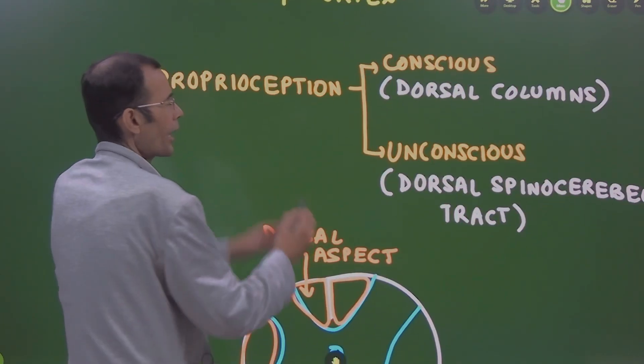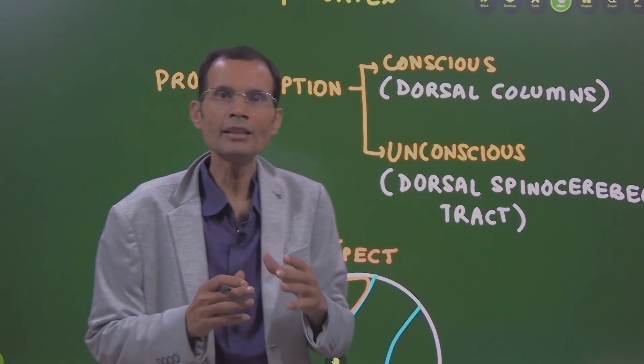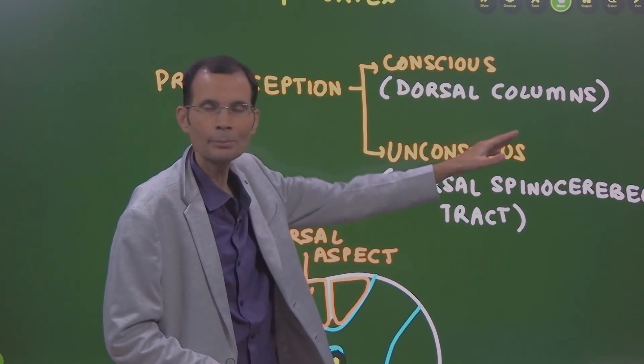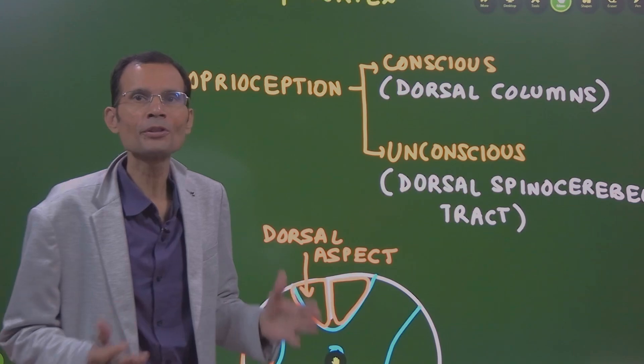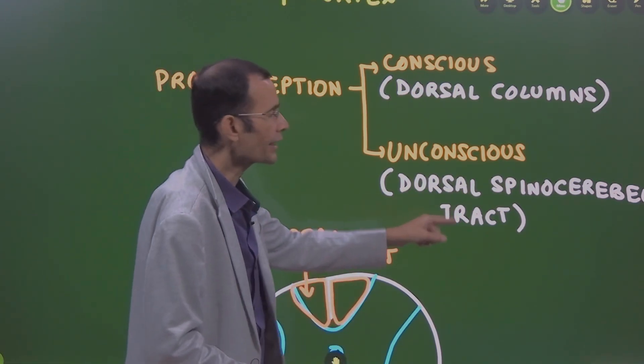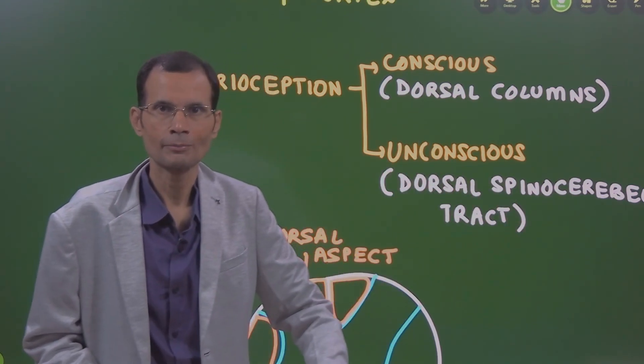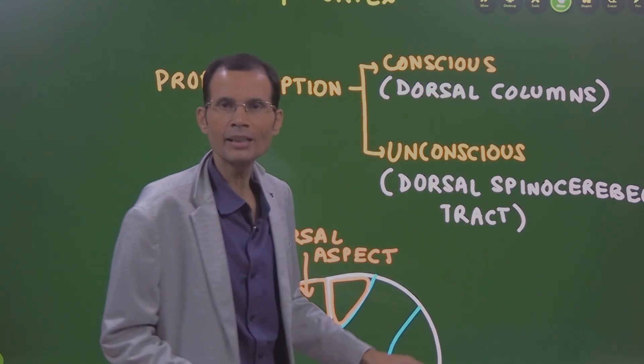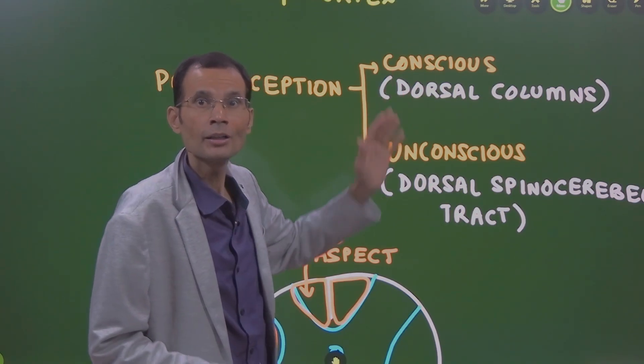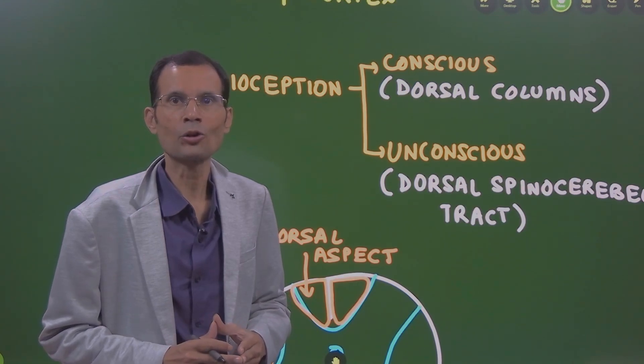Now, these two tracts if you notice conscious proprioception is carried by the dorsal white columns, dorsal column medial lemniscal system and unconscious proprioception which is going to the cerebellum is carried mainly by dorsal spinocerebellar tracts. So the common thing is both are ascending via the spinal cord but to be more precise from the dorsal aspect of the spinal cord.